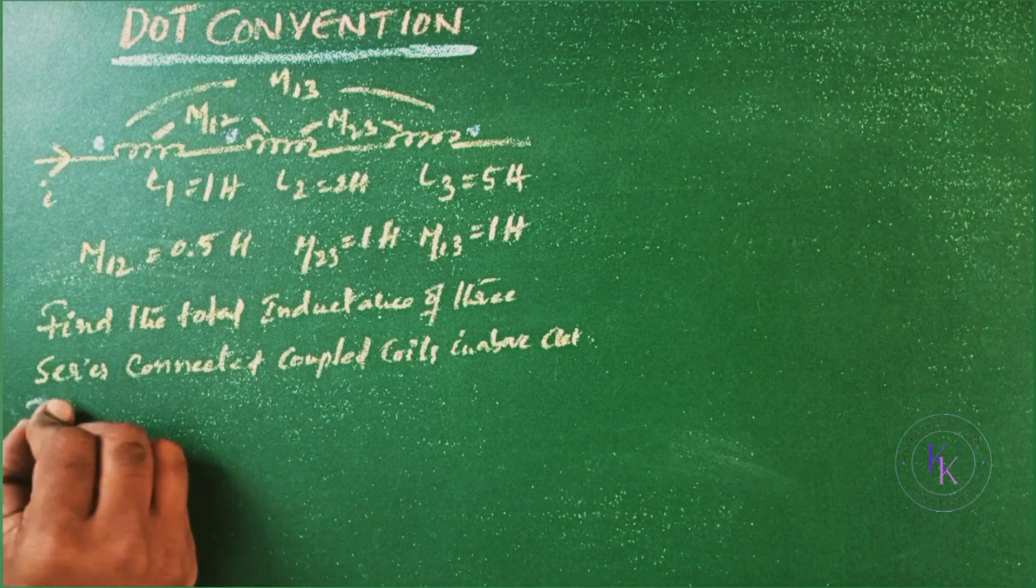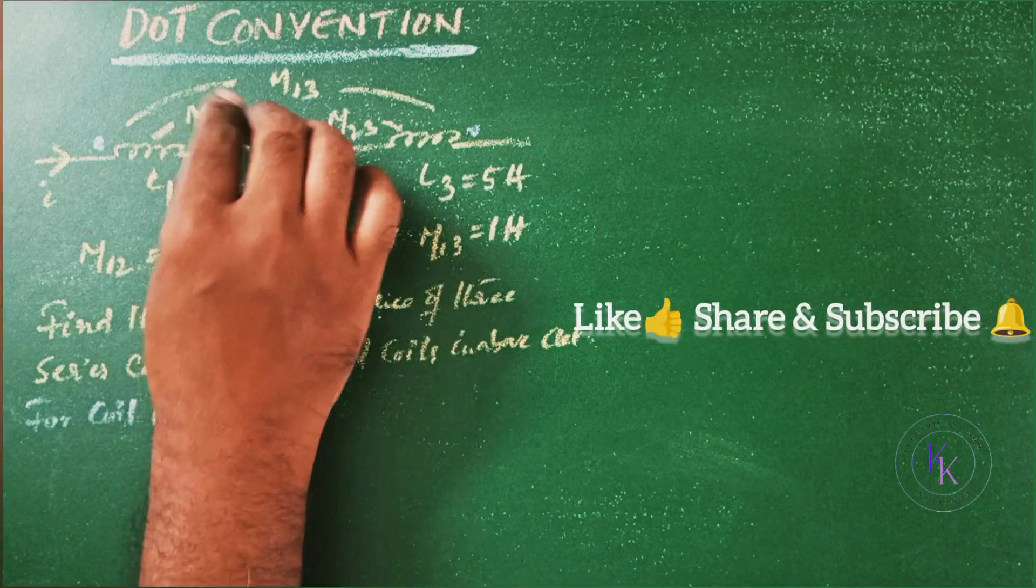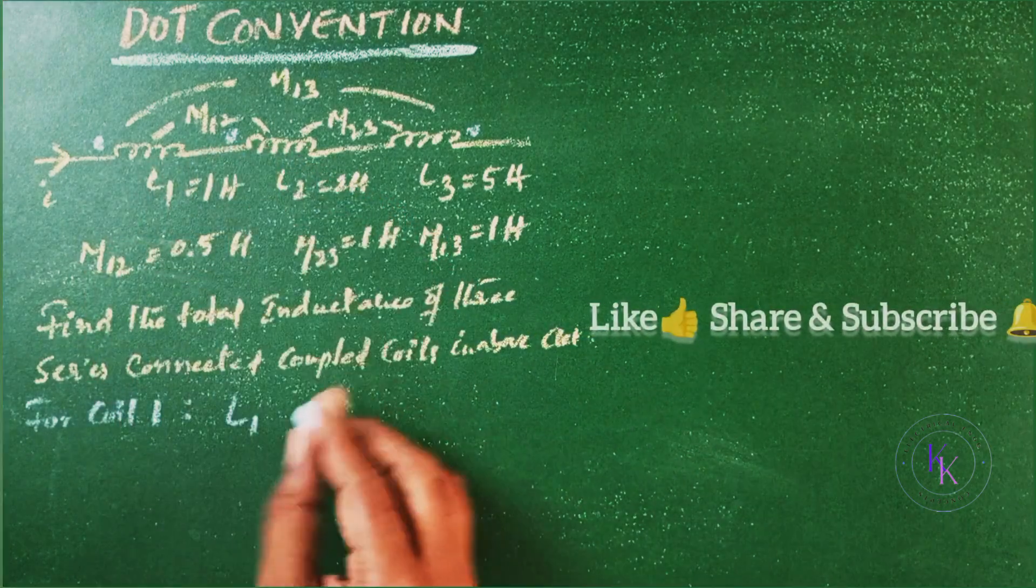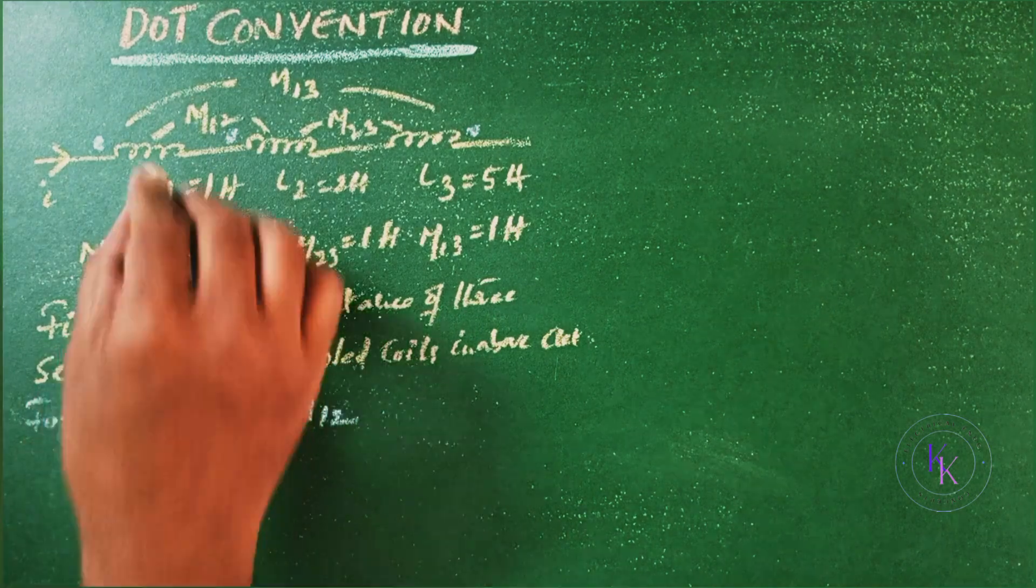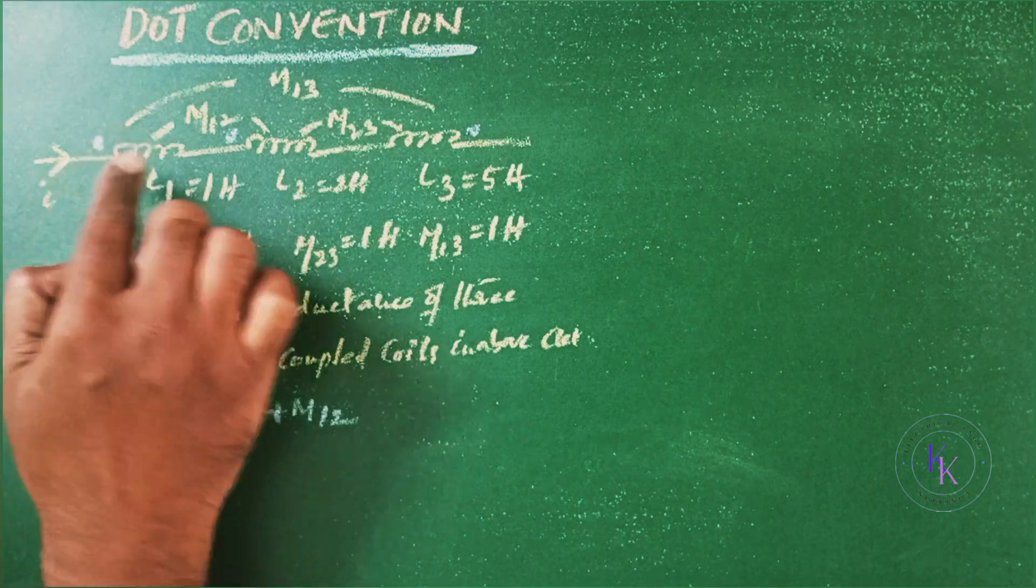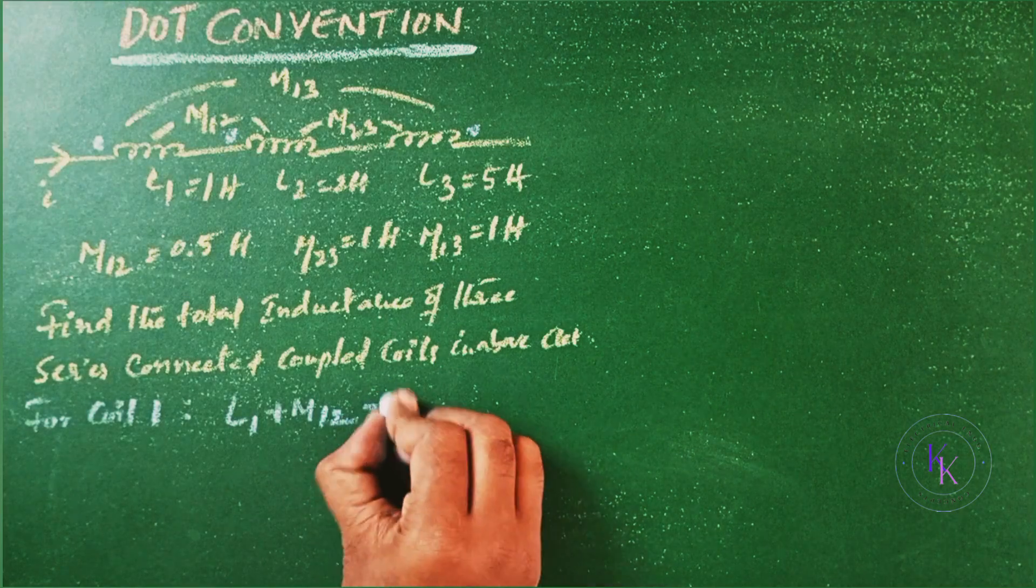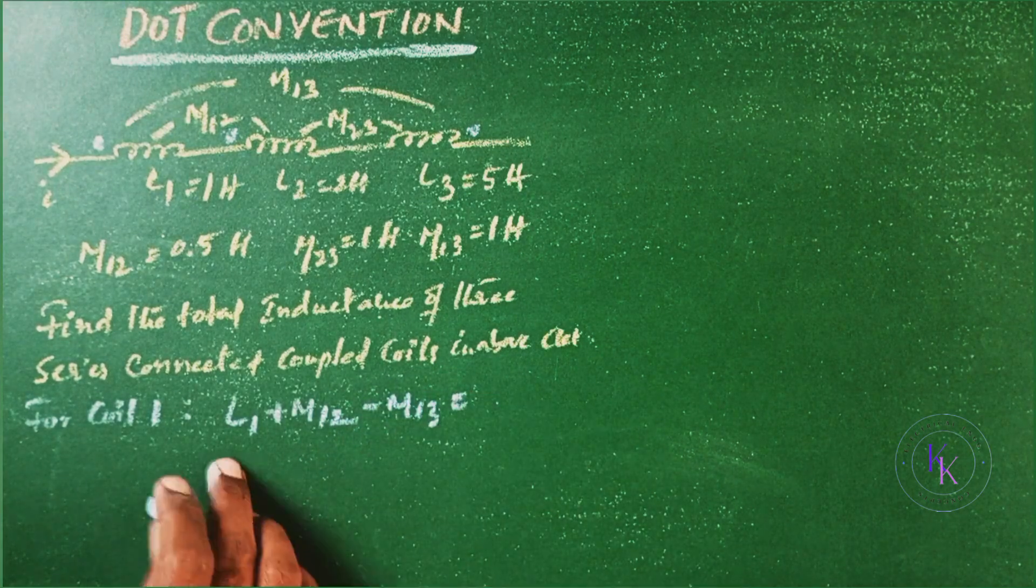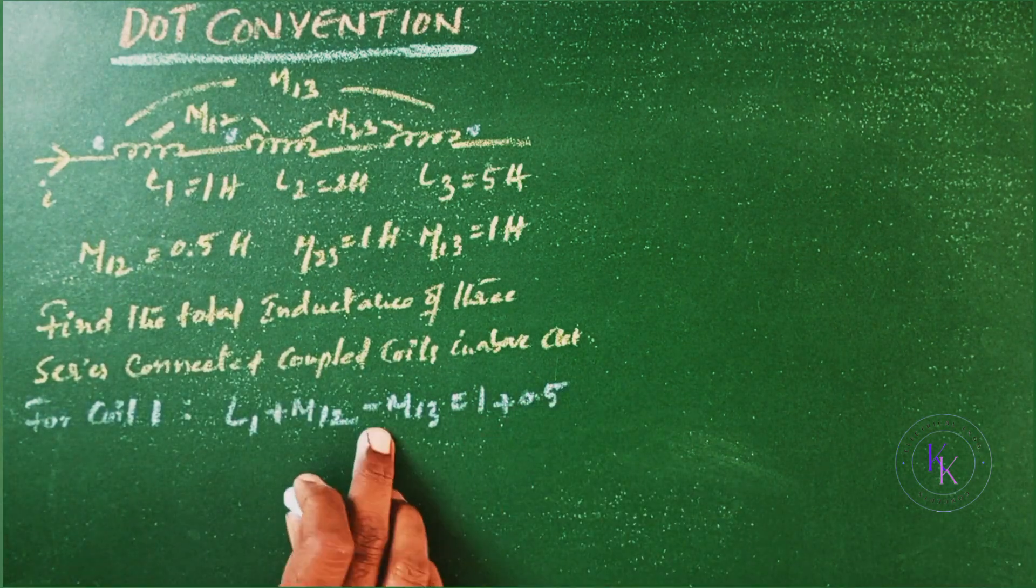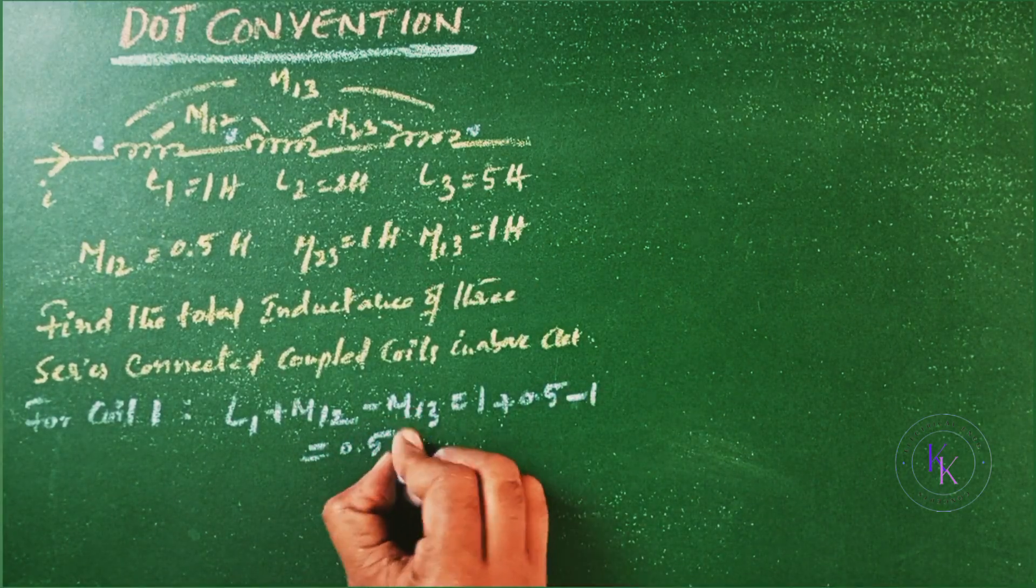Then for coil I1, L1 is the self inductance. There is a mutual coupling between L1 and L2 with M12, and here the current is entering into L1. Here current is entering into L2. Both are entering, so plus M12. And L1 and L3 are also mutually coupled with M13. Whereas in coil I1 the current is entering, whereas in coil I3 current is leaving, so minus M13. Now substitute these values. L1 is 1 Henry plus M12 is 0.5 Henrys and minus M13 is 1 Henry, so minus 1 Henry which equals to 0.5 Henrys.